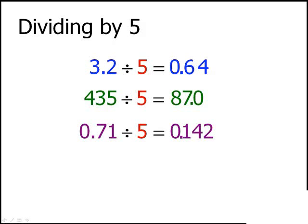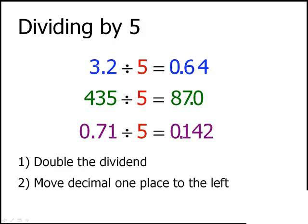So, to divide by 5, our first step is to double the dividend. And our second step is to take our decimal point and move it one space to the left.